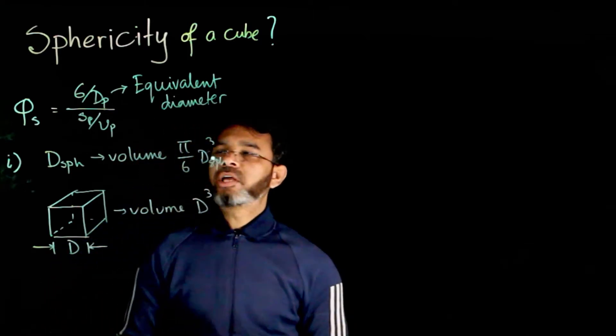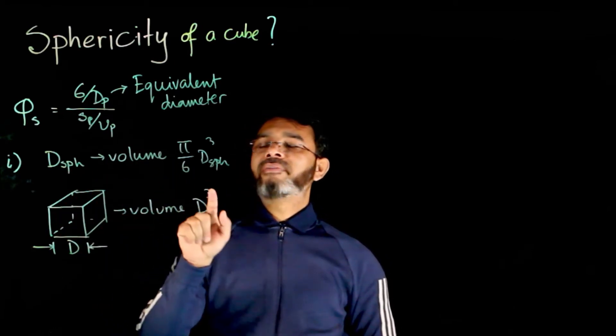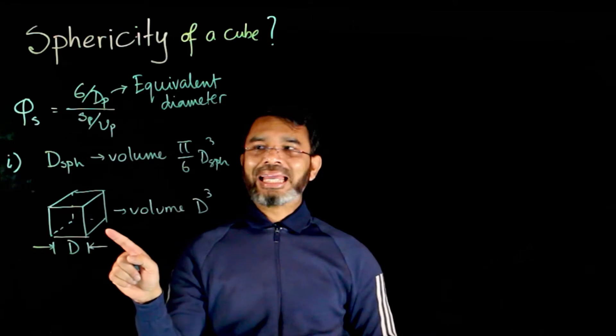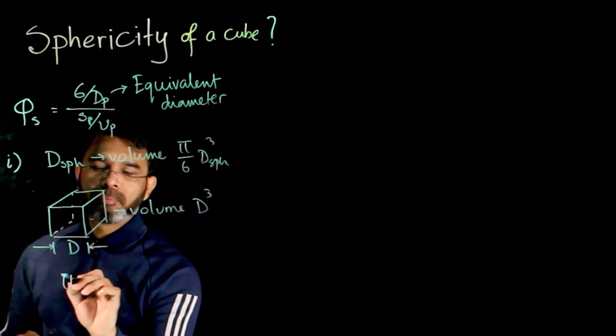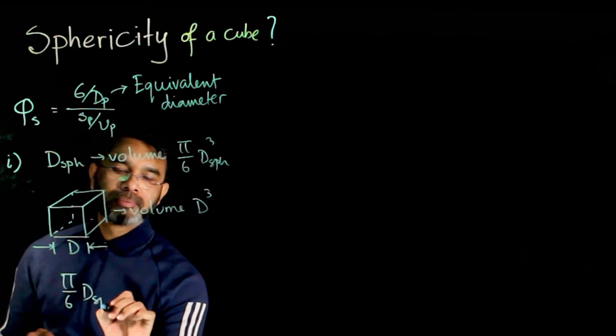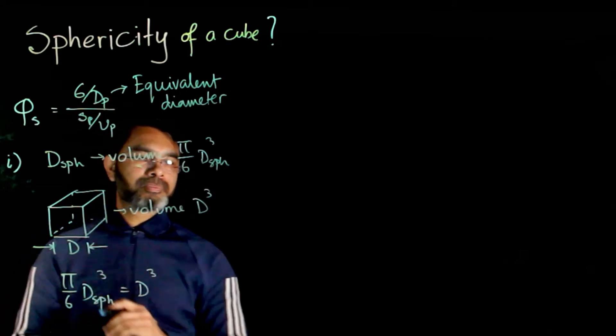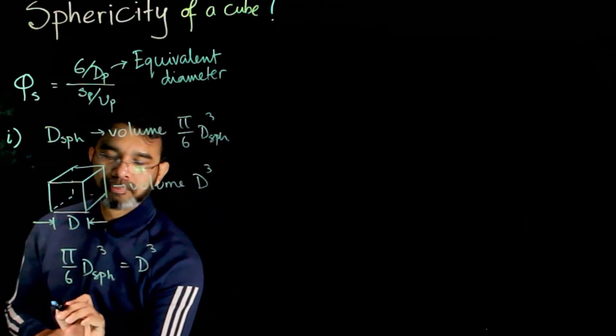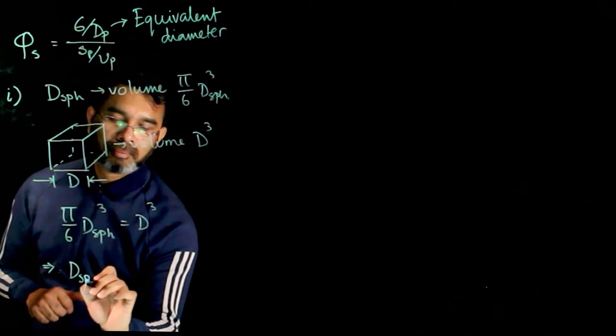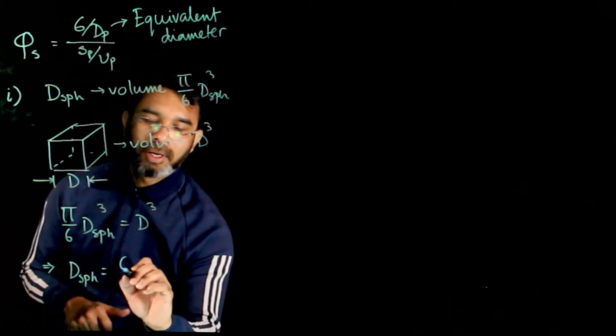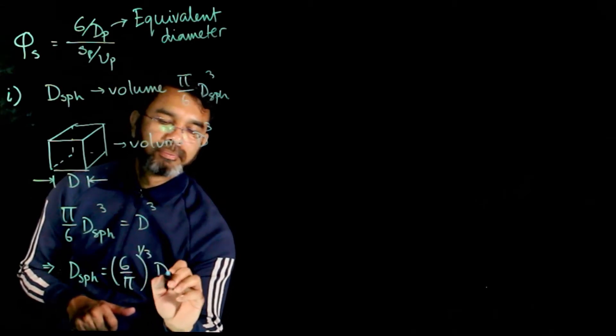By definition, if we take the equivalent diameter as the diameter of the sphere having the same volume as that of the cube, then we have pi over 6 dsph cube equals d cube. So this gives us dsph equals 6 over pi power one third times d.